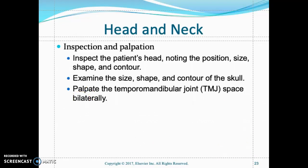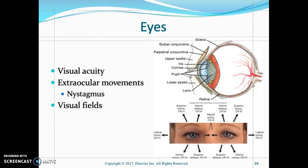The eye has six muscles that control its movement — laterally, superiorly, and inferiorly. Perform the H test, also called the six cardinal fields of gaze, which helps the nurse determine how well these six muscles are working along with cranial nerves three, four, and six.